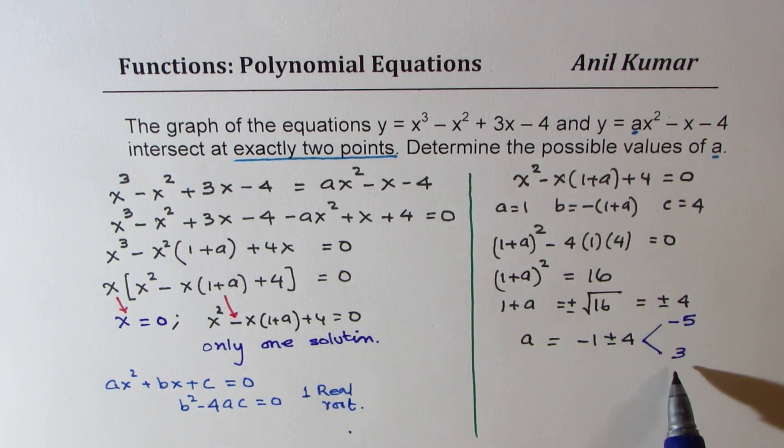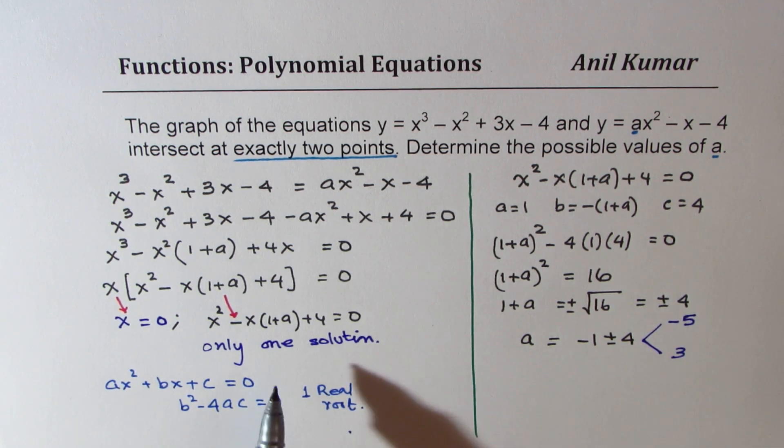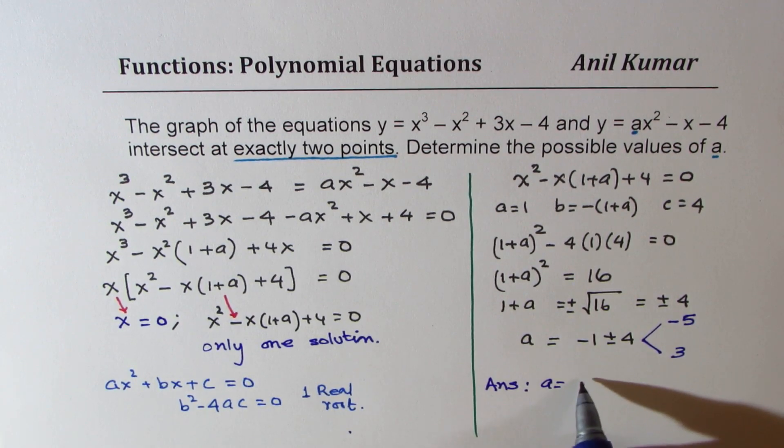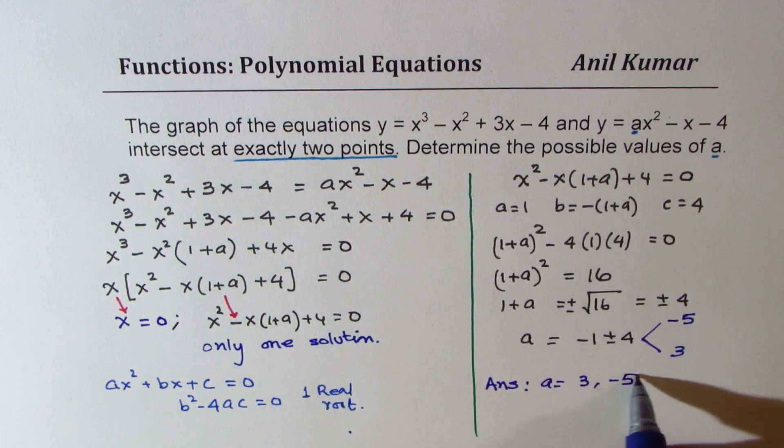You get the idea, right? So it could be both negative gives you this, 1 plus 4 gives you plus 3. So these are two values of a which will give you only one solution here. So we get our answer that a is equal to 3 or minus 5.